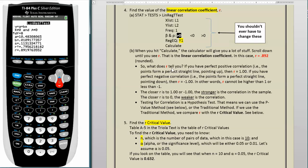That is the linear correlation coefficient. In this case, R equals .892. So I've rounded that to three decimal places.